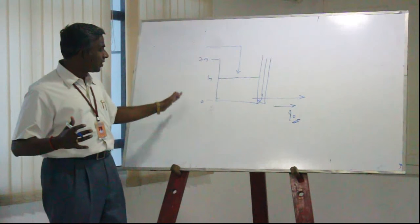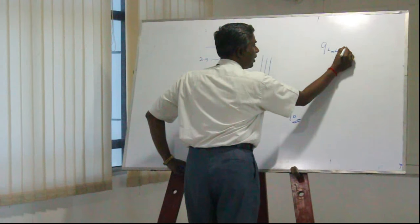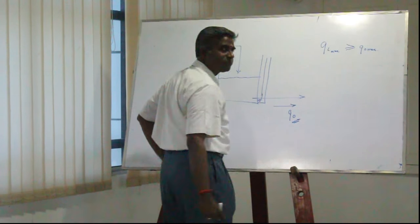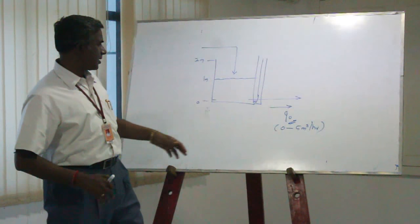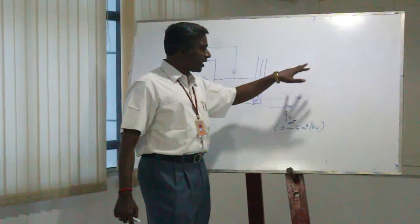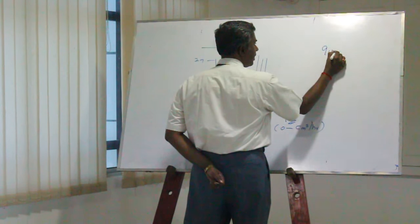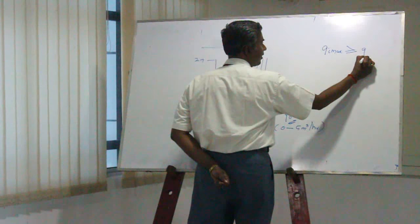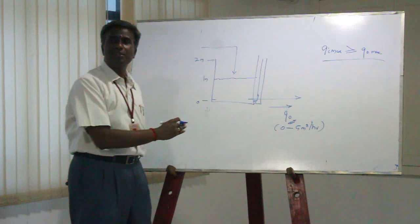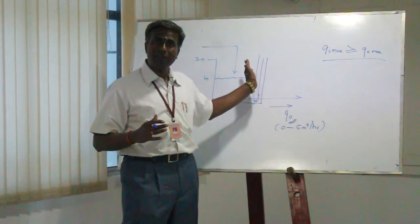What is the boundary condition here? The boundary condition I am going to set is: Qi max will always be greater than or equal to Q0 max. The boundary condition is that at any point of time, the maximum inflow should be greater than or equal to the maximum outflow. Only then the probability of increasing the level would be better.